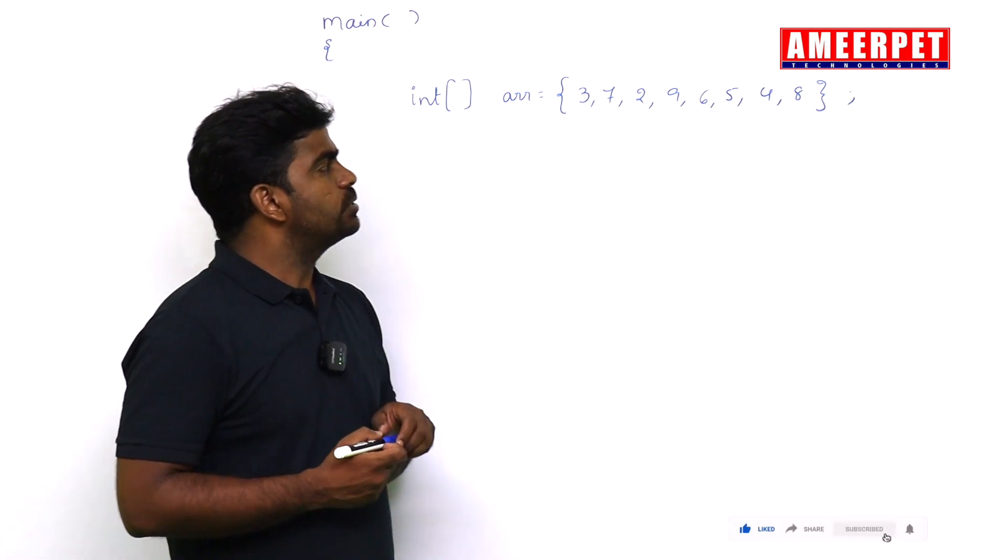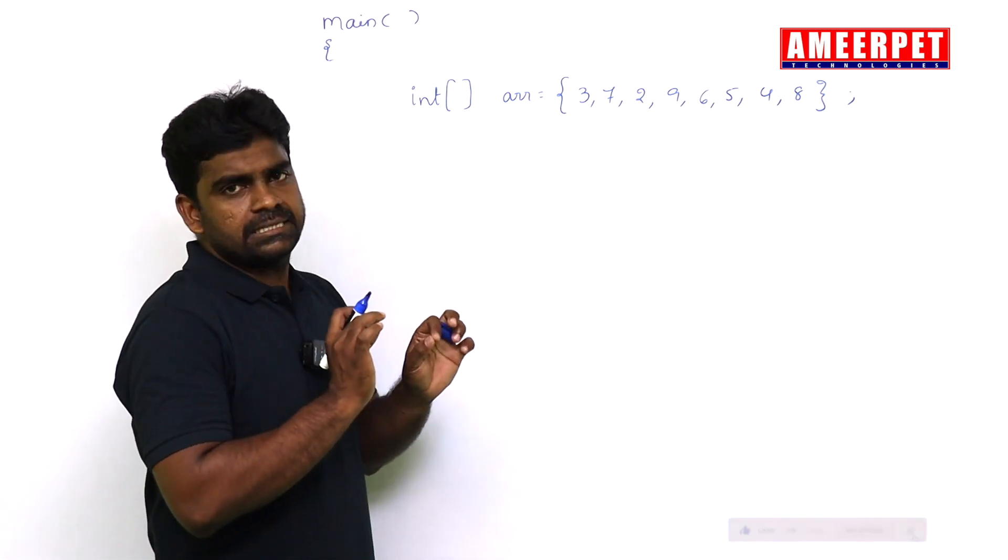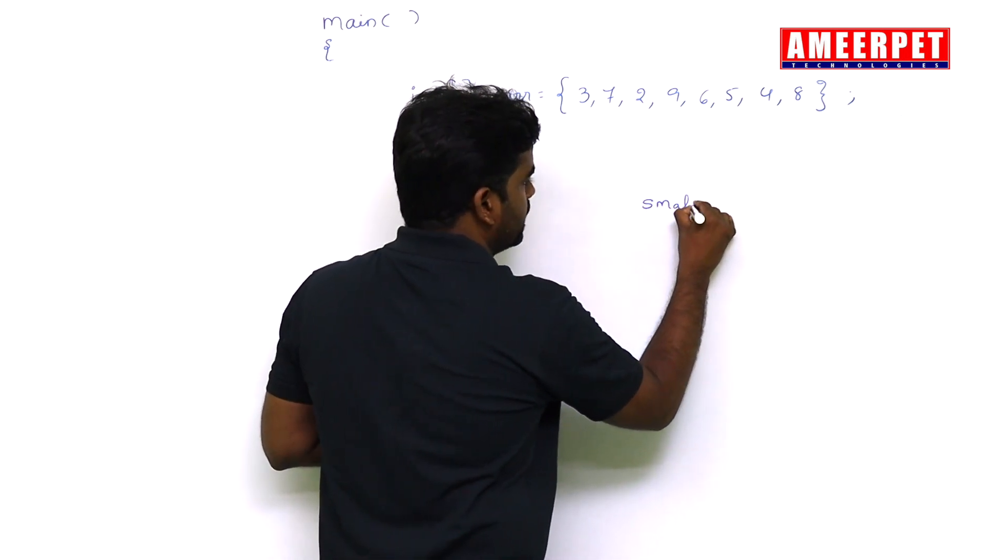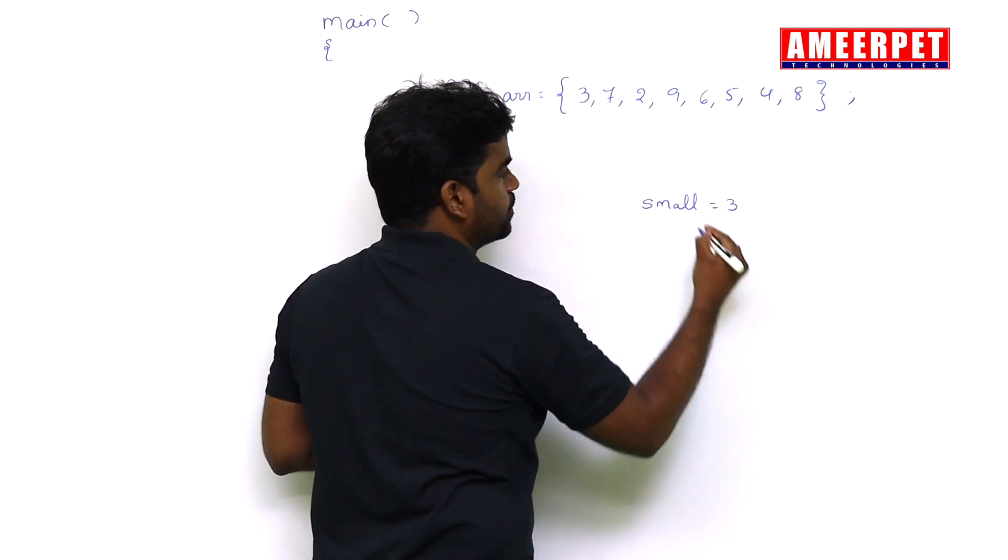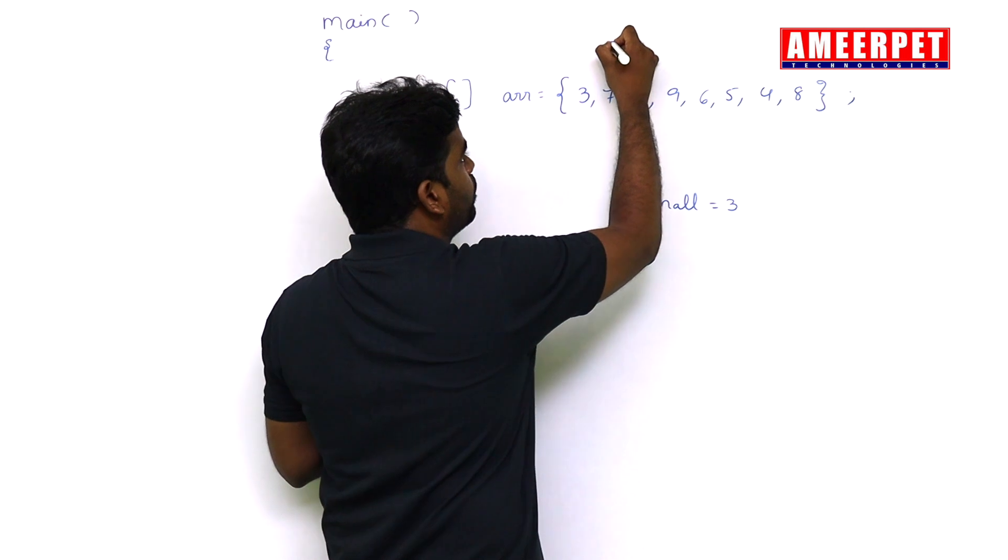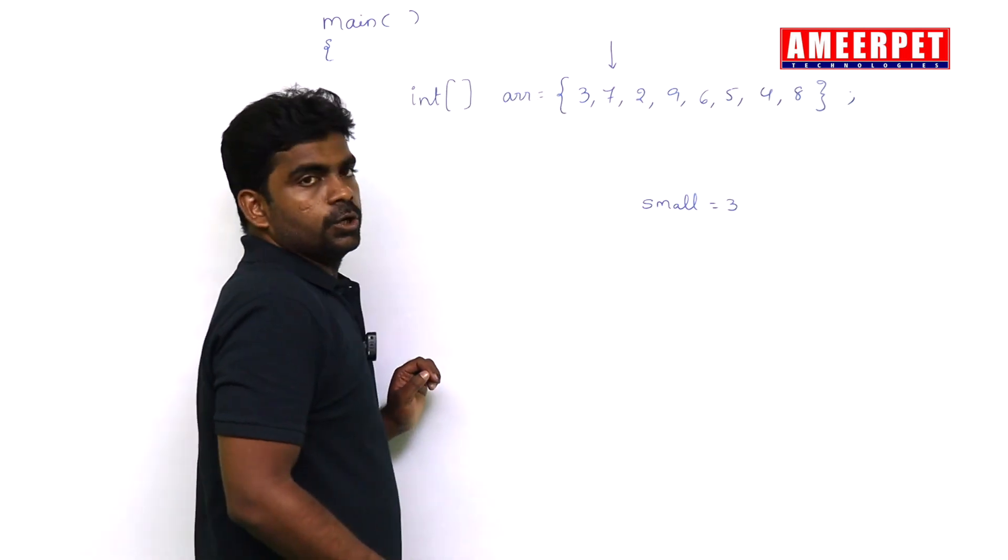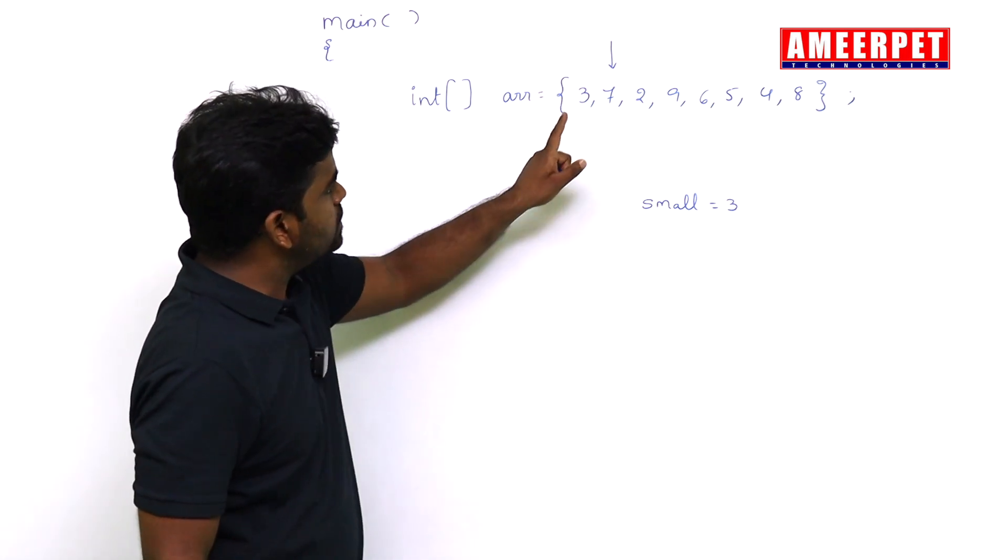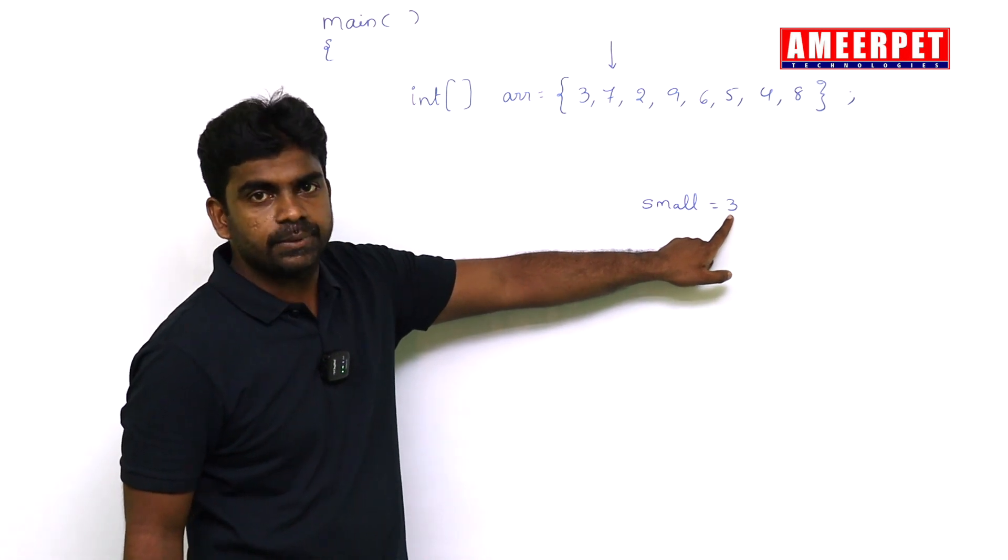We need to find out the smallest element in the array. First, consider the smallest element is the first element only. The first element is 3. Then repeat the loop from first location to last location. No need to consider the zeroth location because the zeroth location element is already considered as the smallest element.